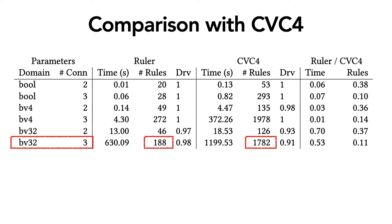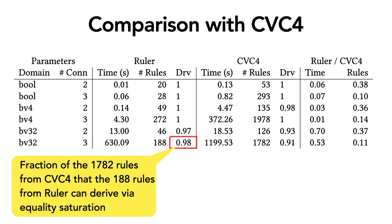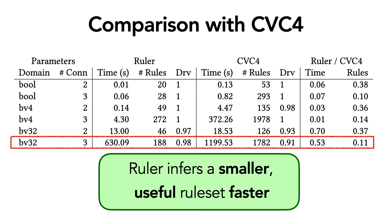And to answer that question, we designed a metric called derivability. Derivability uses equality saturation to compare two rule sets. The way it does this is it allows us to run equality saturation with one rule set over the other. So for example here, we see that the derivability of Ruler's rule set is 0.98. This indicates that 98% of the 1782 rules that CVC4 generated were actually derivable from the 188 rules that Ruler generated by running equality saturation. So the overall conclusion from this part of the evaluation is that Ruler can quickly find a small, useful set of rewrite rules.